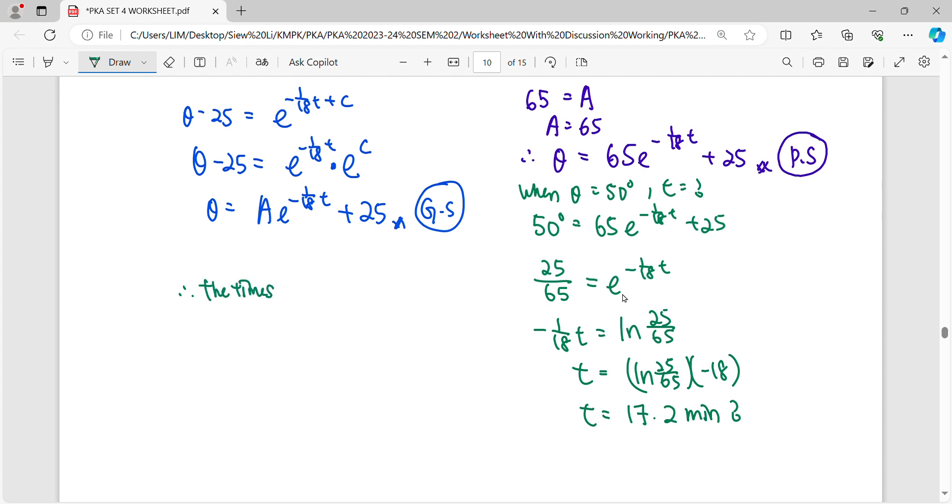Then we have to minus back the 3 minutes when 90 celsius drop down to 80 celsius. So finally your minutes is only 14.2. So the time taken from 80 celsius to 50 celsius is equal to 17.2 minus the 3 minutes, which is from 90 celsius to 80 celsius.